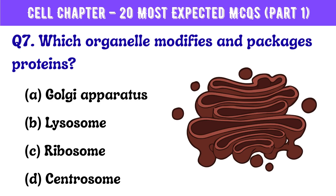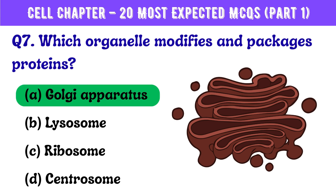Question number 7. Which organelle modifies and packages proteins? Correct answer is option A: Golgi apparatus.